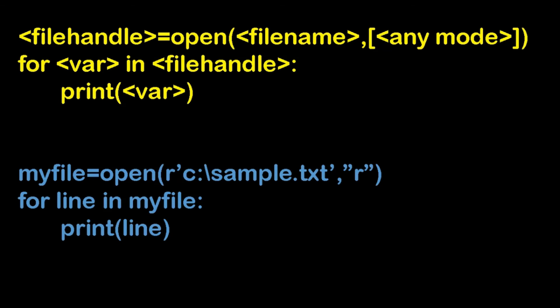This is the same method using a for loop syntax. file_handle = open(file_name, any_mode). Now I will read the file using: for line in file_handler. In this method, we put the loop on the file handler. This is a very easy method — you can display full content.